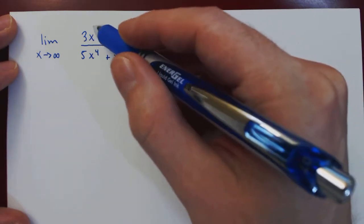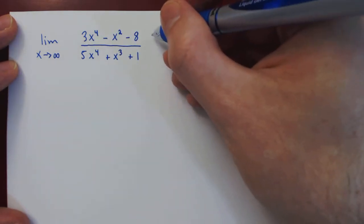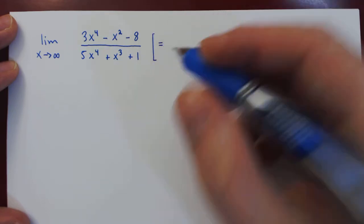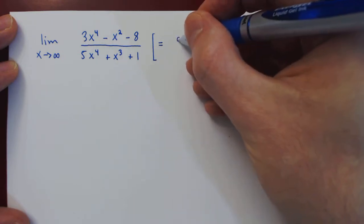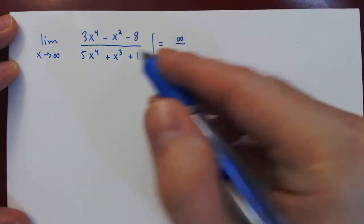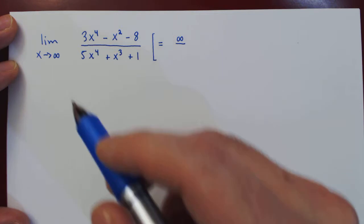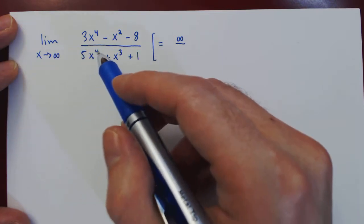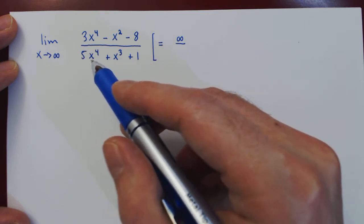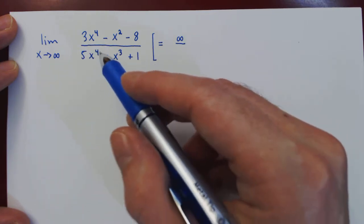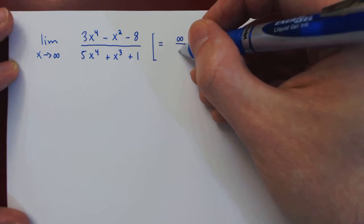In this case it is x to the 4. So if we check our case based on this intuition, then the numerator will be approaching positive infinity, as 3x^4 is by far the largest term on the numerator, and on the denominator 5x^4 is by far the largest term, so it will also be driving the expression on the denominator and will also be going to positive infinity.